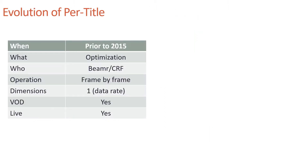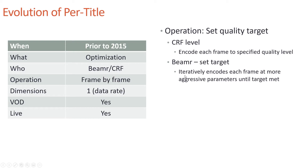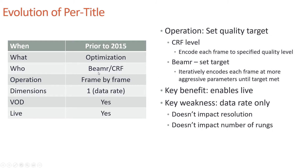Though Netflix debuted per-title encoding, some prior technologies did something similar — optimization technologies like Beamer or CRF encoding in FFmpeg with x264, x265, and VP9. You set a quality target, and the tool encodes each frame to that quality level. The key benefit is it enables live transcoding. The key weakness is it's data rate only — it only adjusts the data rate of individual rungs, not the resolution or number of rungs.